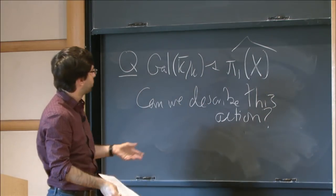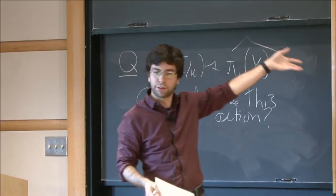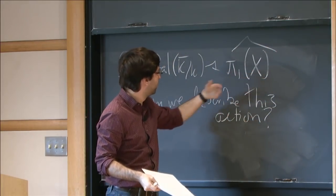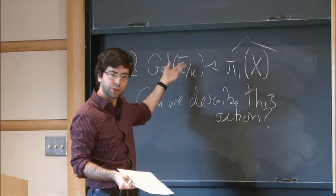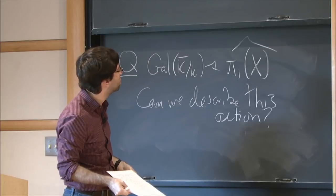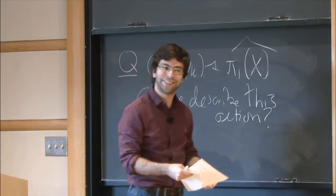Yeah, so I'm interested in going from number theory to algebraic geometry, like the theorems I described here, but then there are also applications going the other way. So if you really understand the geometry of x and how it influences this action, maybe you can say something about the Galois group of k and get some number theoretic information from the algebraic geometry. So yeah, that's all I had to say.